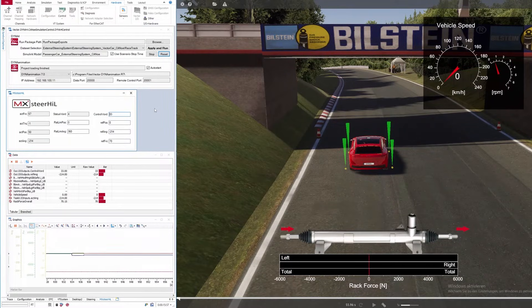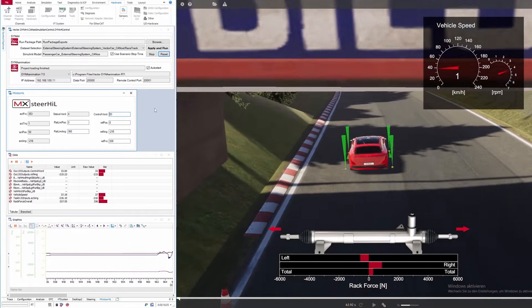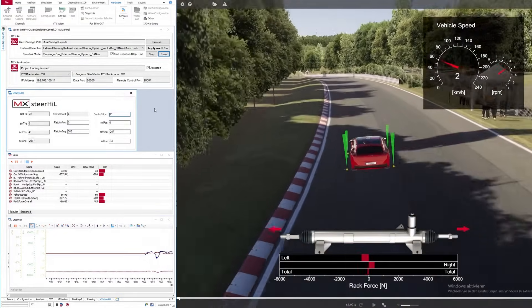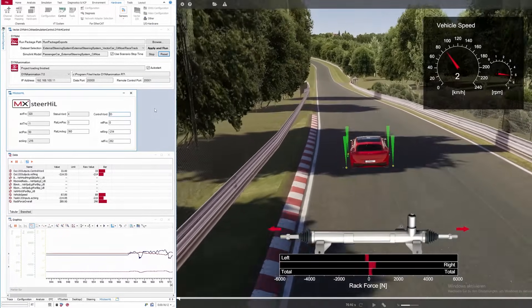On the host PC you see the CANOO front end for operation of the system and for test automation. On the right hand side we have Dyna animation visualizing the scene and showing the tire forces as green arrows.